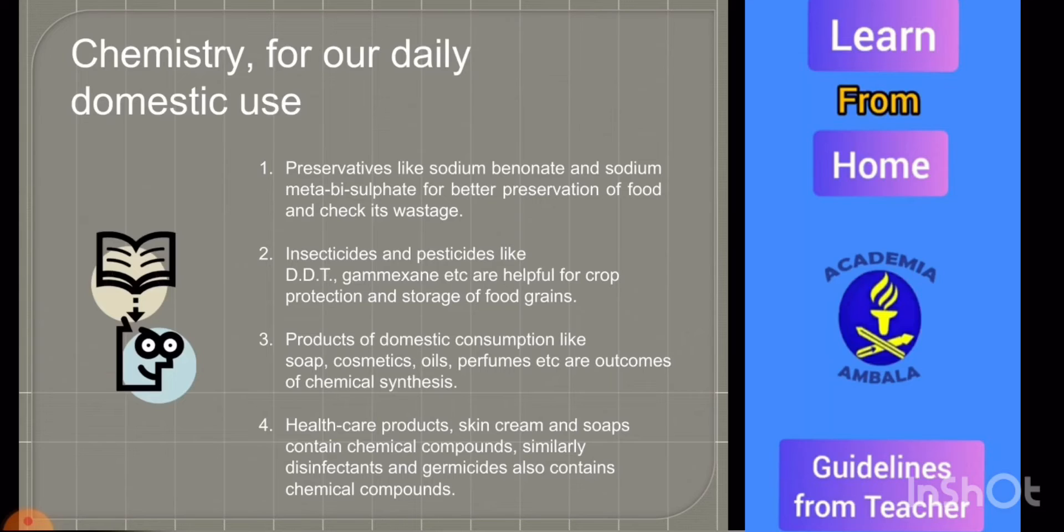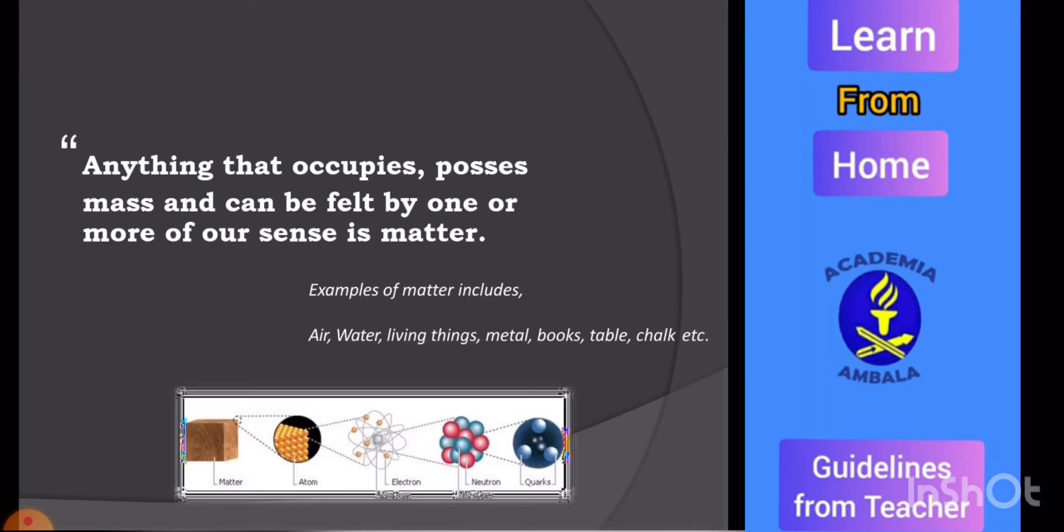Third, products of domestic consumption like soaps, cosmetics, oils, perfumes, etc., are outcomes of chemical science. Healthcare products like skin creams, soaps contain chemical compounds. Similarly, various disinfectants and germicides also contain chemical compounds.